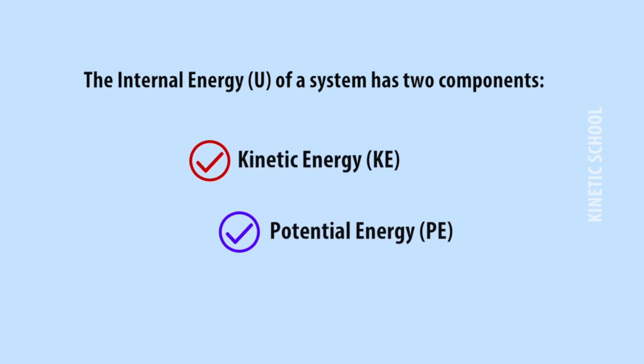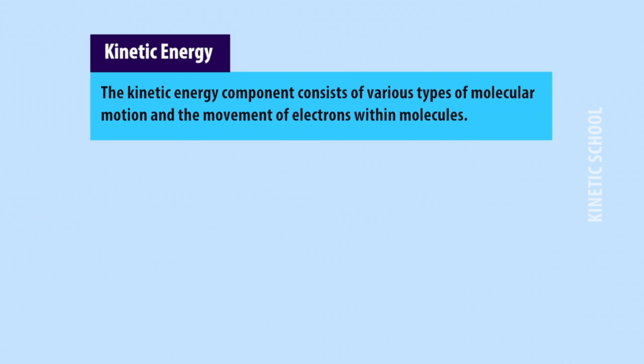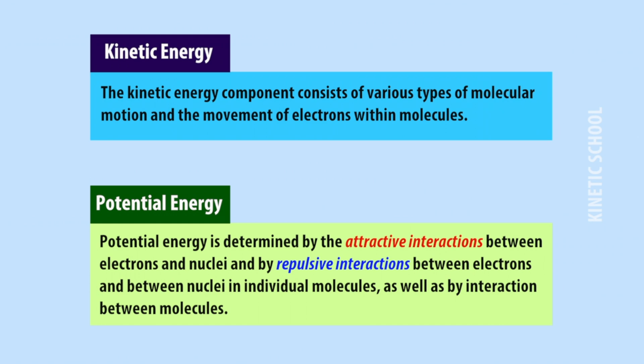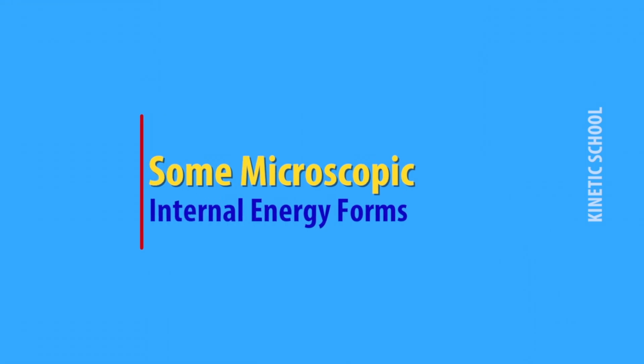The internal energy of a system has two components: kinetic energy and potential energy. The kinetic energy component consists of various types of molecular motion and the movement of electrons within molecules. Potential energy is determined by the attractive interaction between electrons and nuclei, and by repulsive interaction between electrons and between nuclei in individual molecules, as well as by the interaction between molecules.